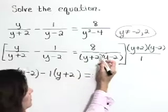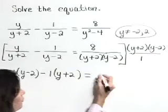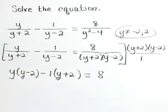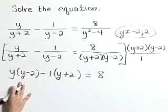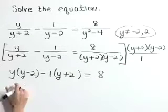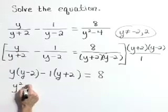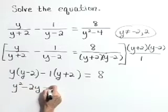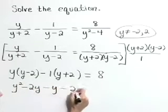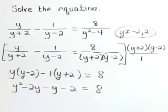On the right-hand side, both of those factors cancel, leaving the number 8. Now let's solve our resulting linear equation. Distribute to get y squared minus 2y, minus y minus 2, is equal to 8.